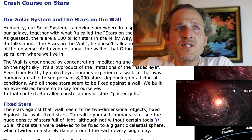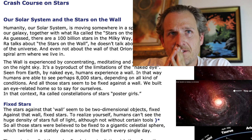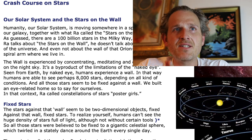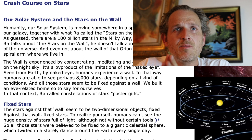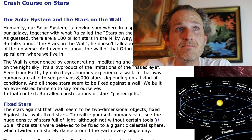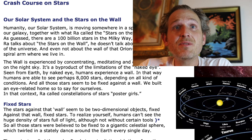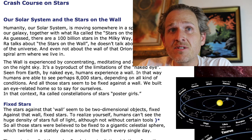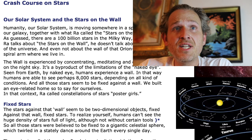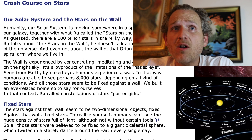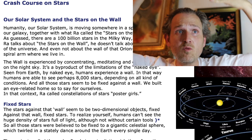The wall is experienced by concentrating, meditating, and contemplating on the night sky. It's a byproduct of the limitations of the naked eye. Seen from Earth by naked eye, humans experience a wall. In that way, humans are able to see perhaps 8,000 stars, depending on all kinds of conditions. And all those stars seem to be fixed against a wall.